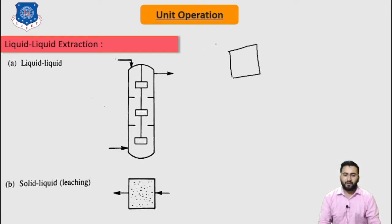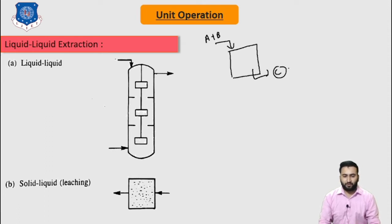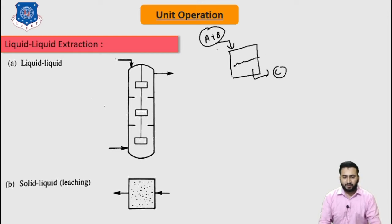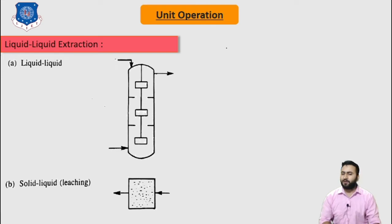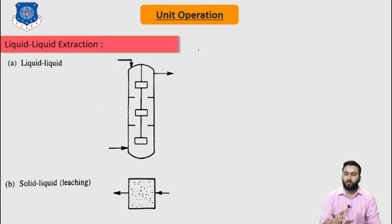Then we discussed about the continuous process. In continuous process, we continuously feed reactant A plus B and continuously remove product C. Continuously removing product C creates room for the reactants A and B. So here the flow of reactant and product is in a continuous manner. We also discussed various advantages and disadvantages of both processes.